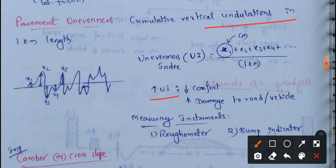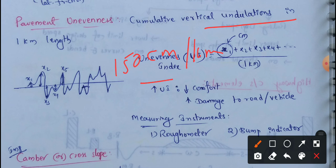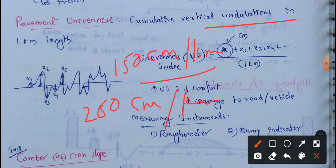The Unevenness Index (UI) for good pavements — expressways, national highways, etc. — the value is 150 cm per km. For roads designed at 100 km/h design speed, the Unevenness Index value is 250 cm per km. So good pavements cost 150 cm per km, and for 100 km/h design speed roads it is 250 cm per km. This covers pavement surface characteristics: friction and pavement unevenness.